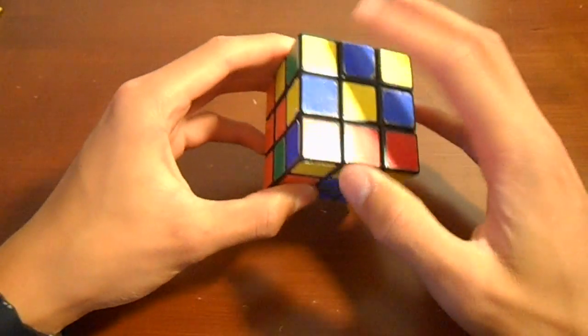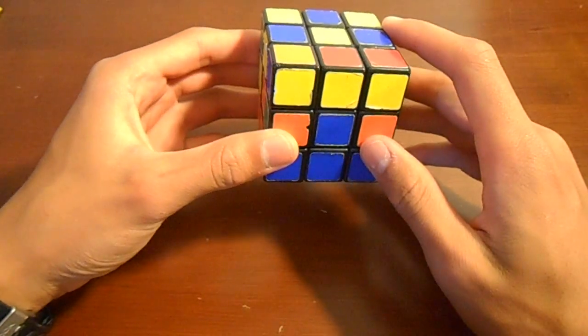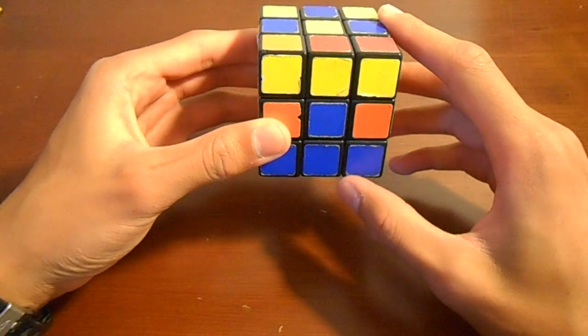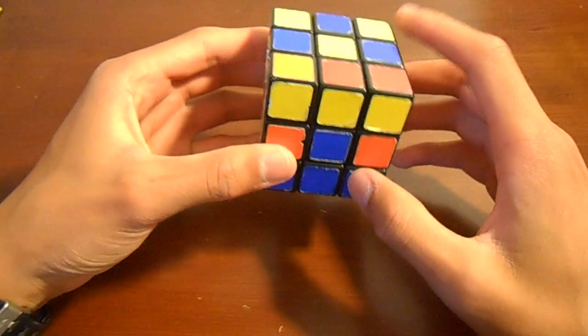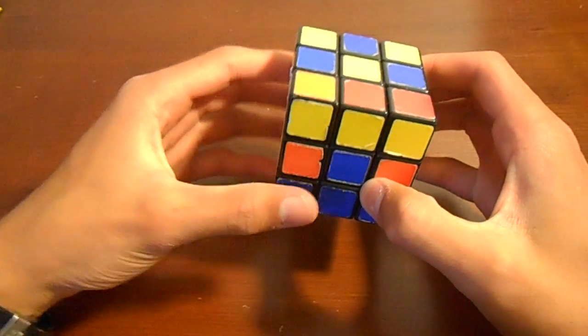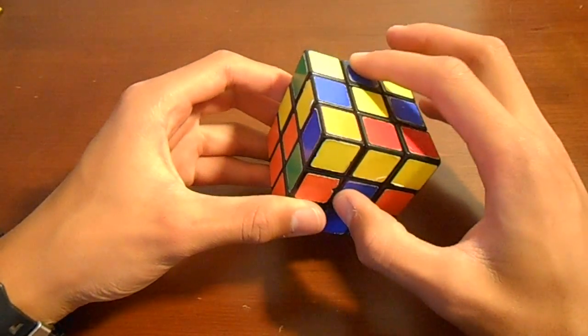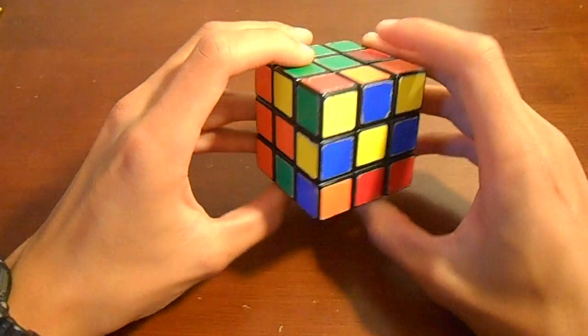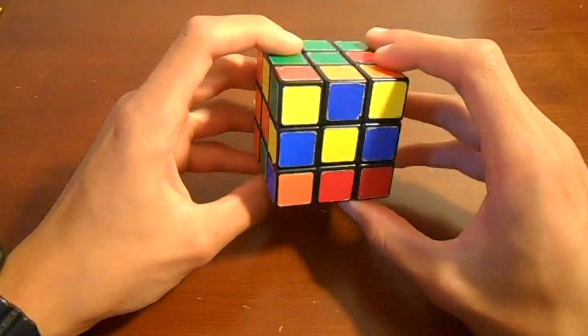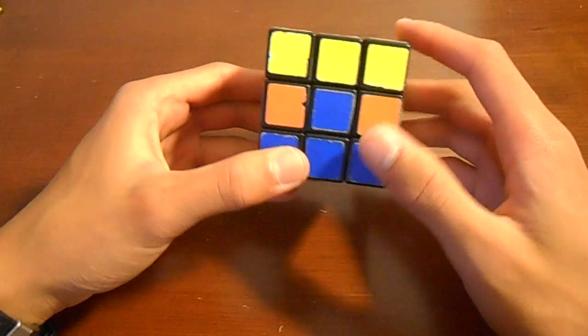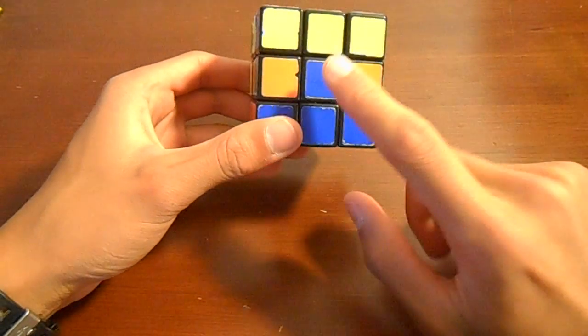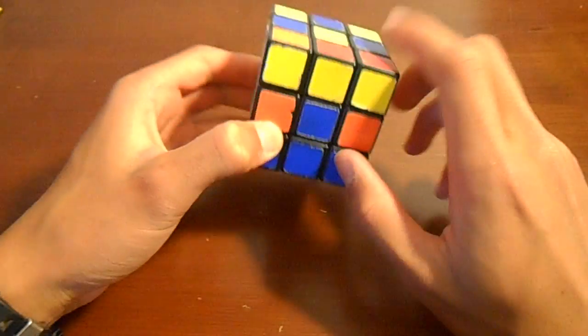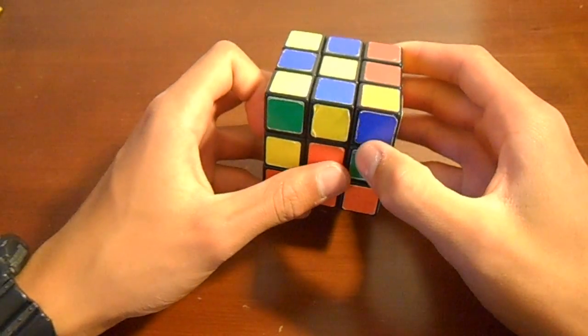Now that we have oriented the piece correctly, what we're going to do now is we're going to rotate the cube. Now how you figure out which way to rotate the cube from this orientation is you look at the piece that you're inserting. So this is blue-orange, and we look at the center pieces. So here's blue, here's orange, so we're going to turn it to the orange side.